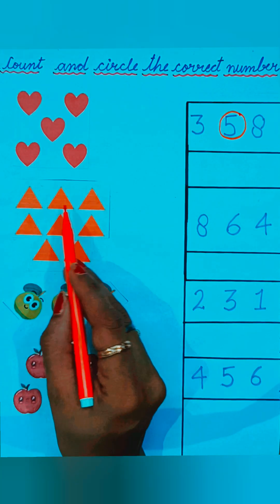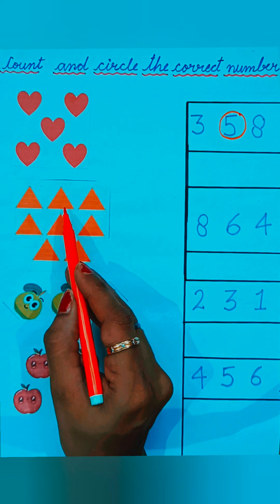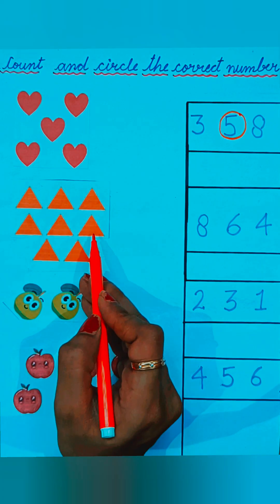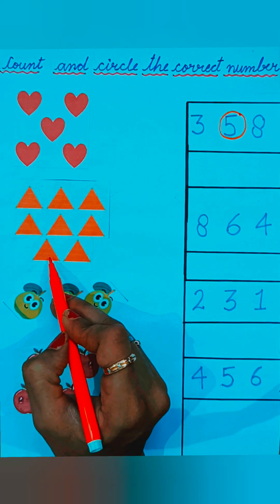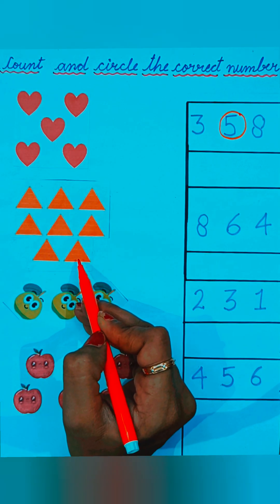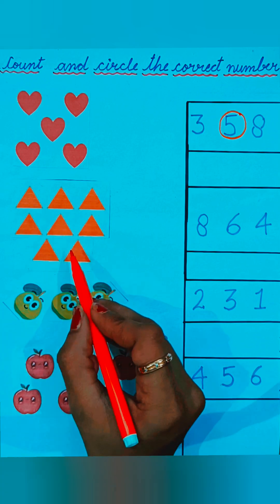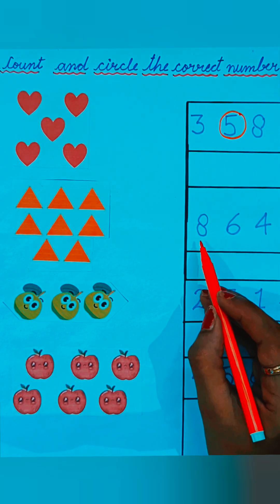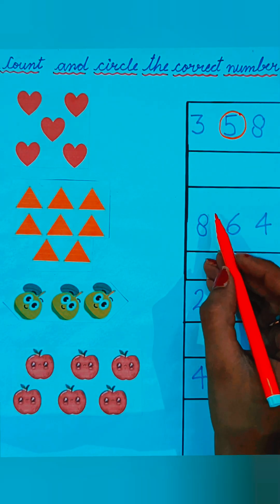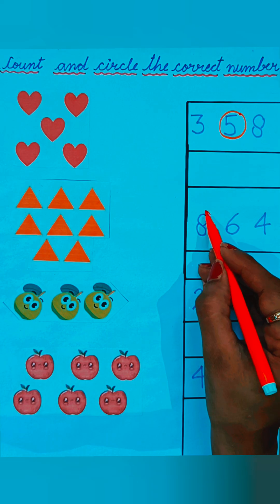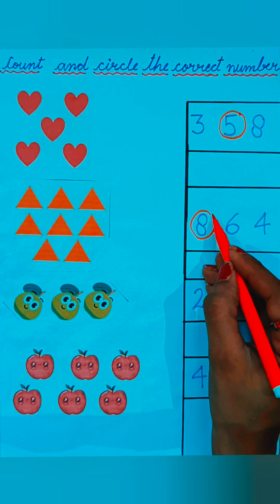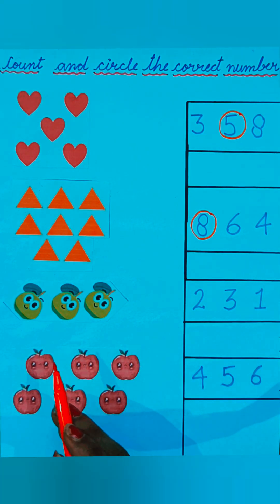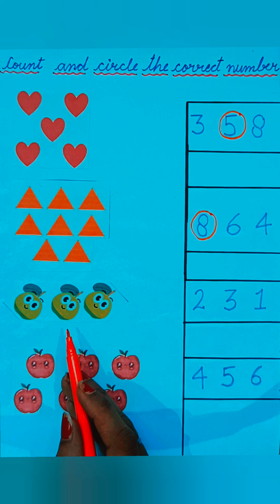Let's count the triangles: one, two, three, four, five, six, seven, eight — eight triangles are given in the picture. Let's see the numbers: eight, six, and four. Which number is correct? Number eight is correct because eight triangles are given, so we will circle on number eight.